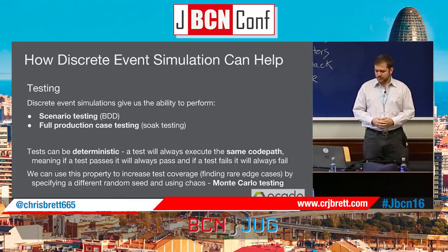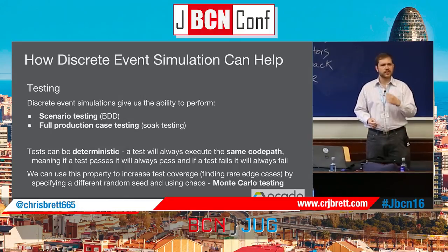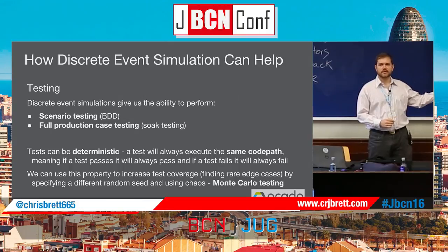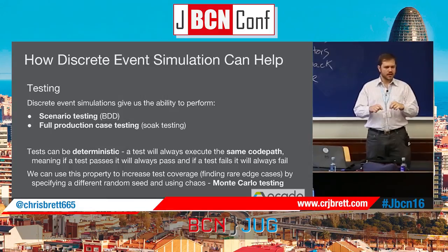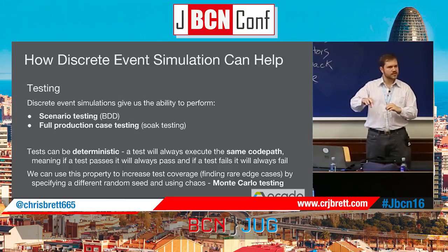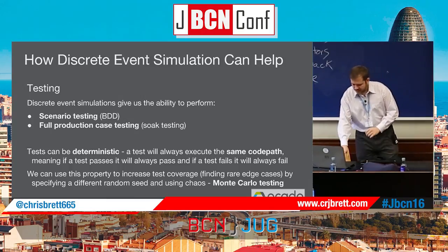We can also use determinism to add another property: because we can use randomness in either our simulation or production system, we can use different random seeds to produce chaos. We can run the same scenario with lots of different random seeds and increase test coverage. For example, in our conveyor simulation we might model some discrepancy in the time it takes for a container to move from one place to another — that random amount means containers will take slightly longer, causing the production system to route them differently, sending them down different paths. This is Monte Carlo testing.